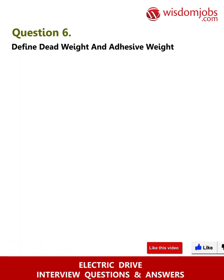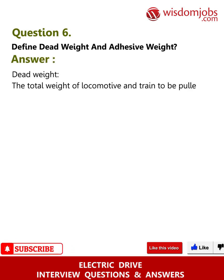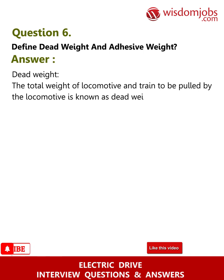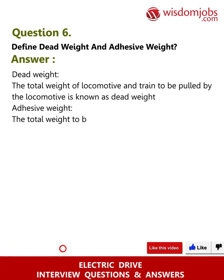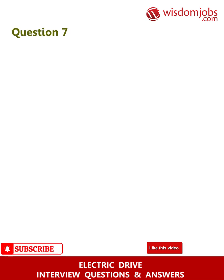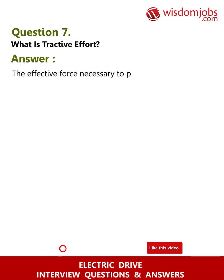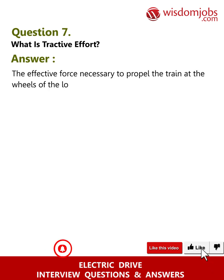Question six: Define dead weight and adhesive weight. Answer: Dead weight — the total weight of the locomotive and train to be pulled by the locomotive is known as dead weight. Adhesive weight — the total weight to be carried on the driving wheels is known as the adhesive weight.